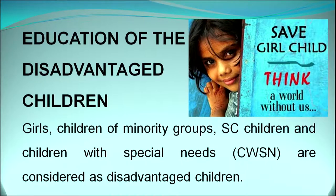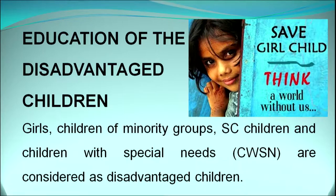Girls, children of minority groups, scheduled caste, scheduled tribe children, and children with special needs — those who are also called children with disability — are considered as the disadvantaged children.